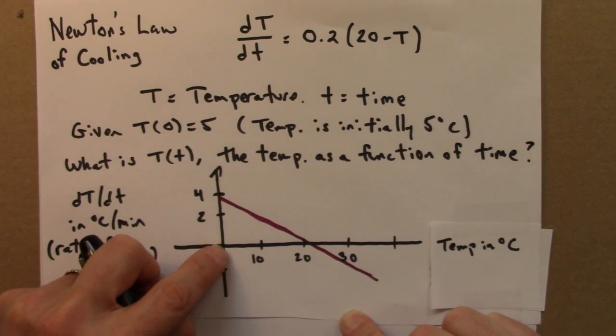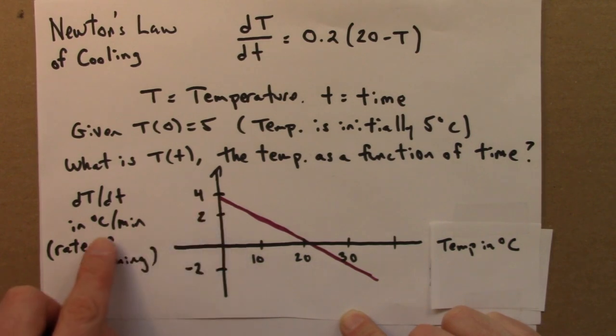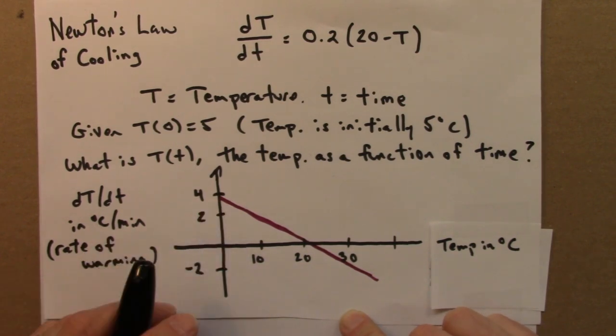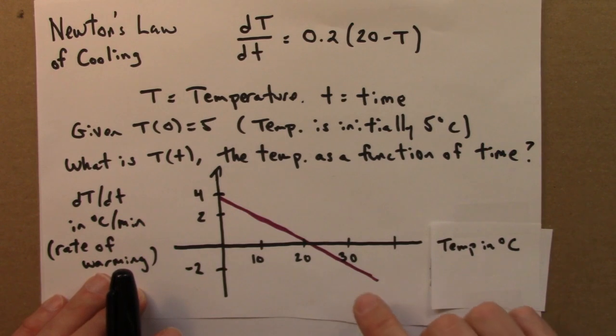If we have water that's right around 0, then it would be warming up at 4 degrees per minute. So, we use this graph to read not the direct value of the temperature, but if we know the temperature, we can figure out how fast the temperature is changing.